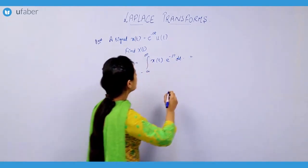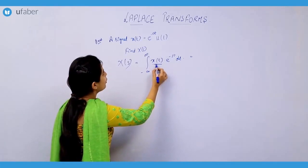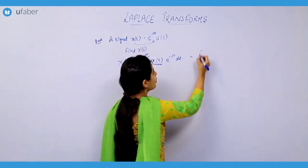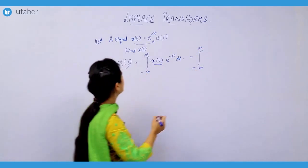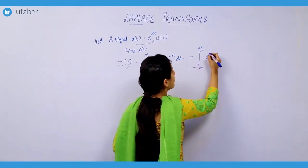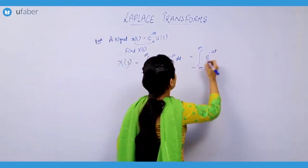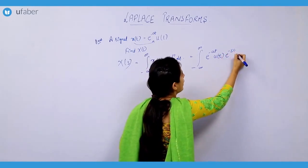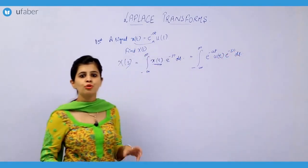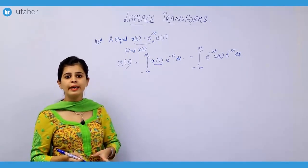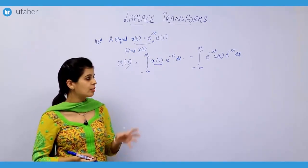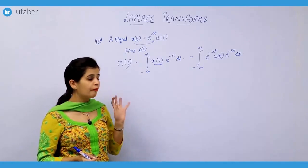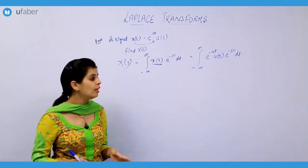Now what we have to do is substitute the value of x(t) into the integral. So we will be getting the integral from minus infinity to infinity of e raised to the power minus at, times u(t), times e raised to the power minus st dt. You should be very proficient in integration, as you have to deal with questions of Laplace transform — you should have a very good hold on integration as well.